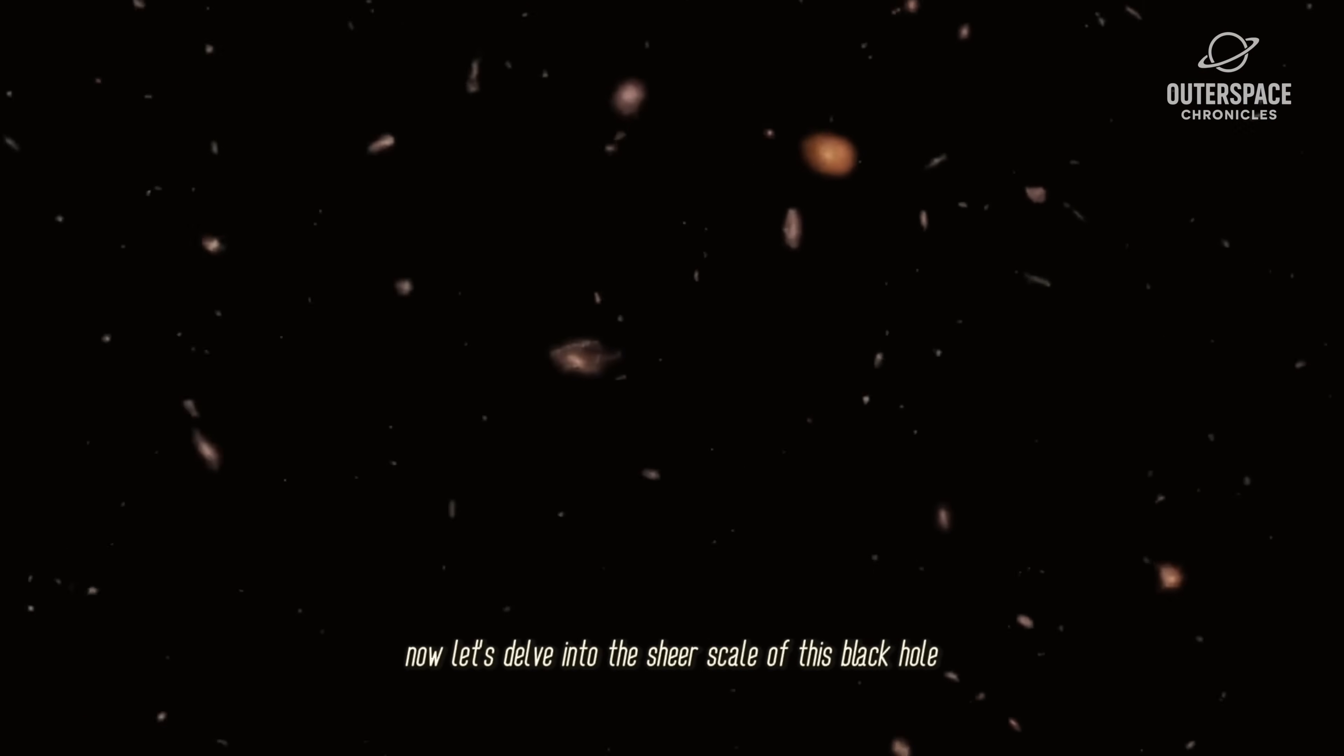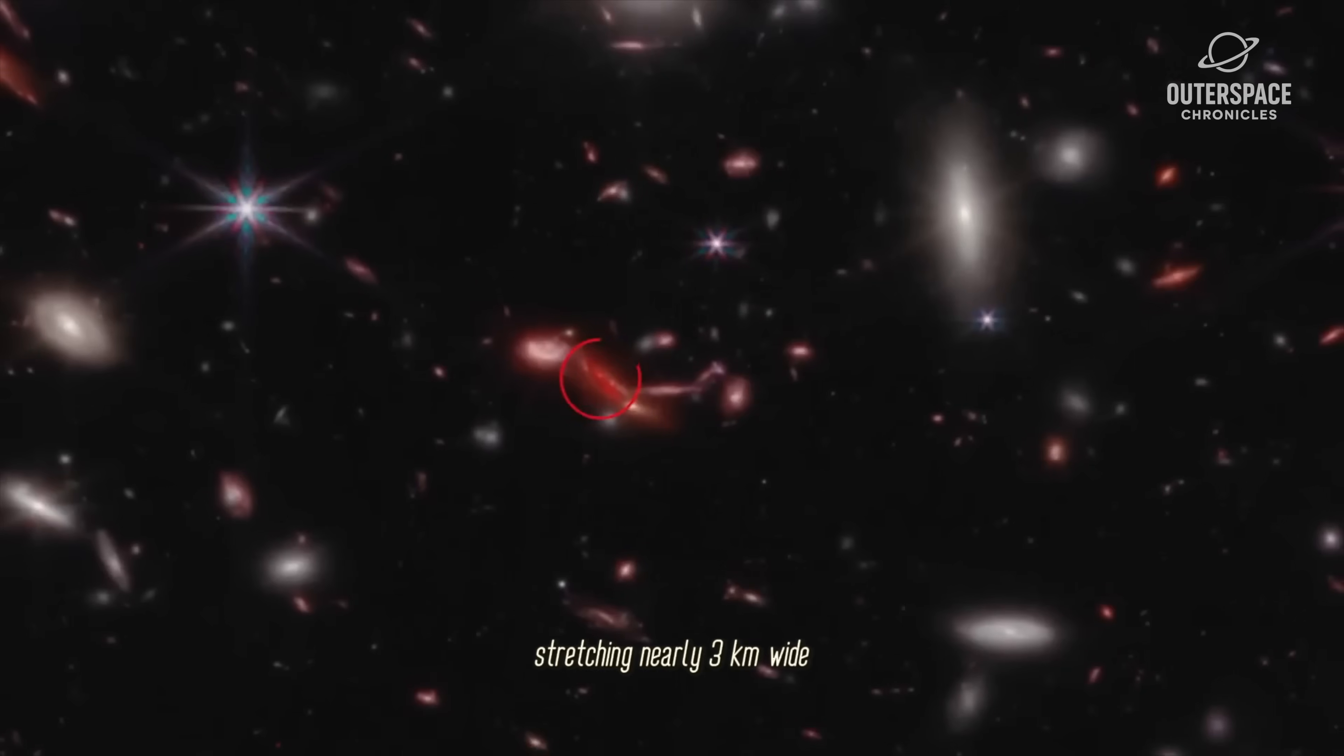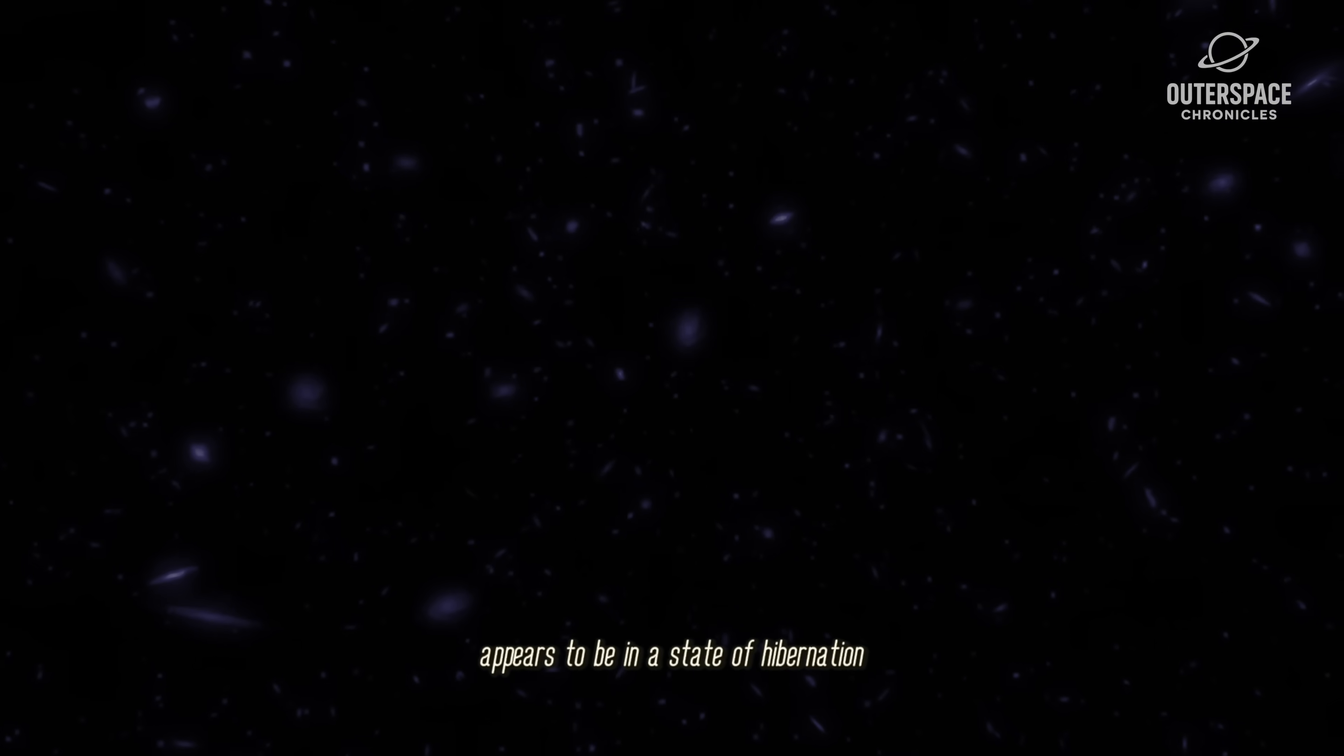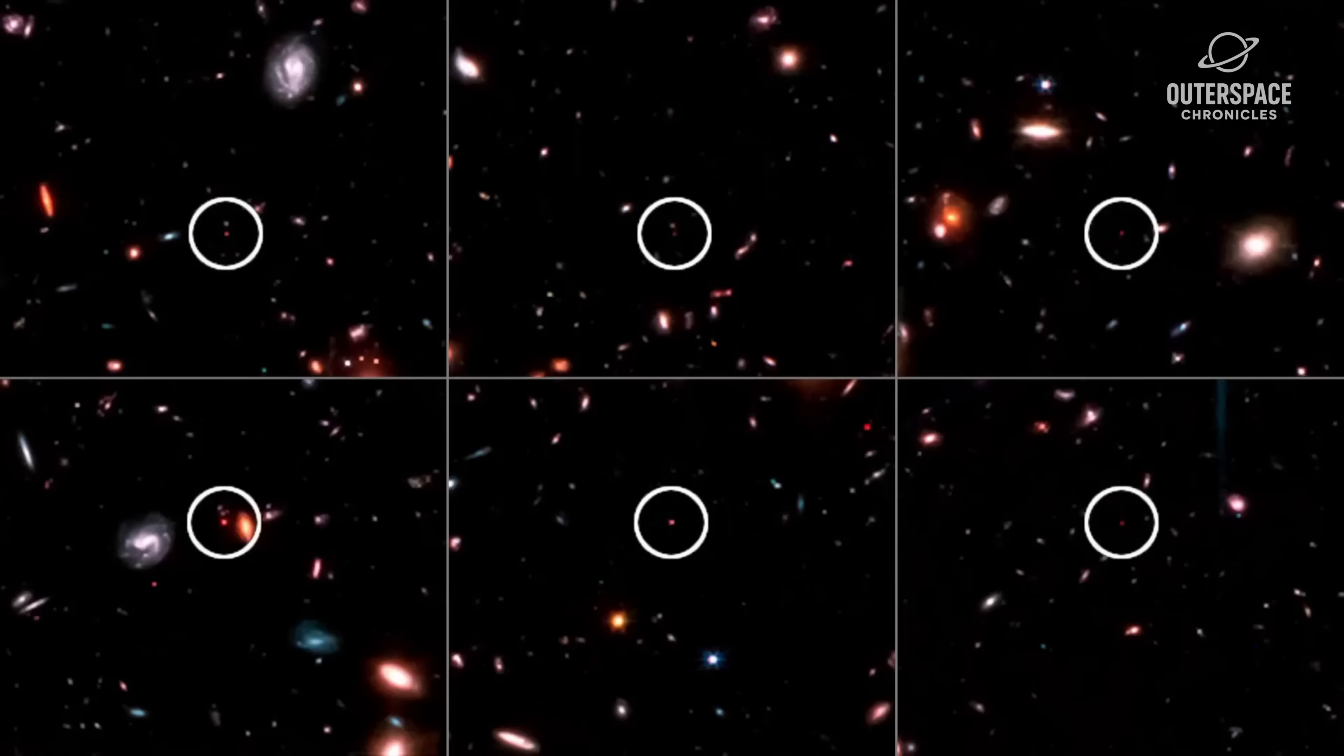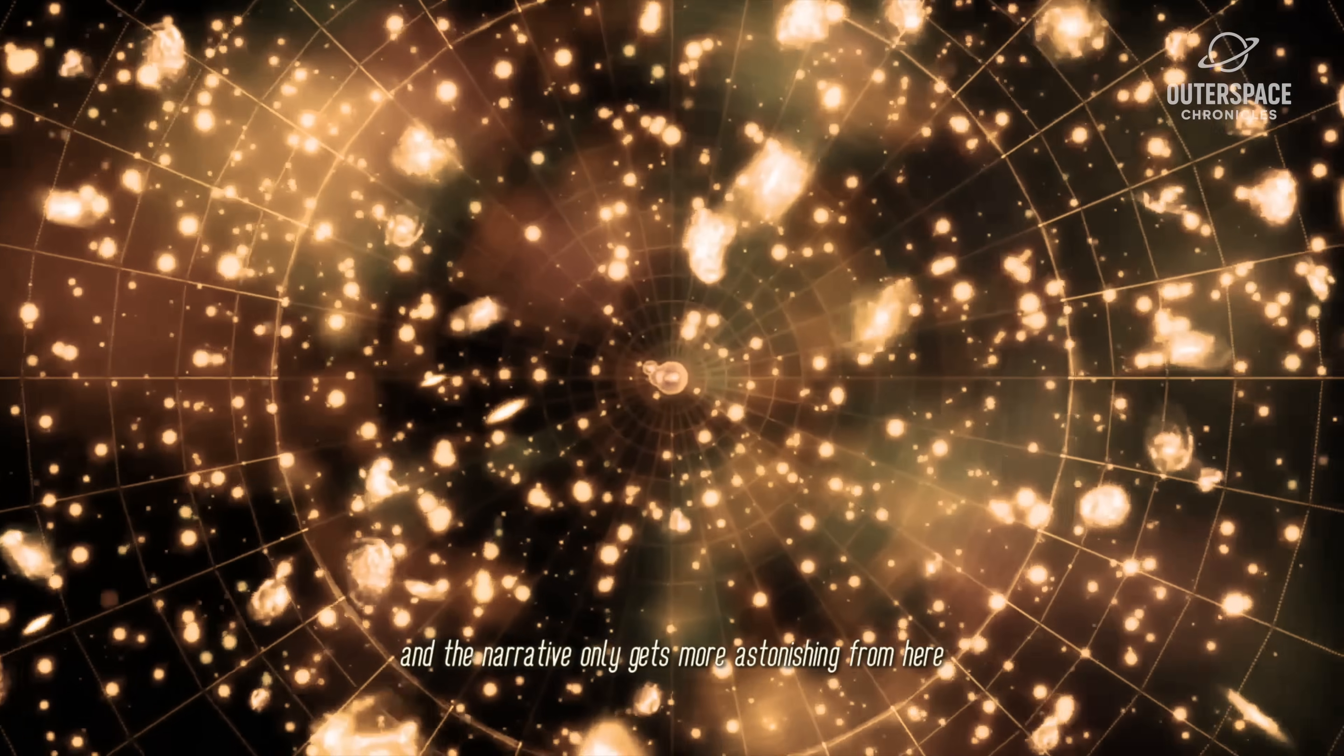Let's delve into the sheer scale of this black hole. If we imagine our sun as the size of a small marble, this gargantuan black hole would be a colossal sphere stretching nearly three kilometers wide. Even more captivating is the fact that this black hole appears to be in a state of hibernation. It is consuming material at a mere 1% of its maximum feeding capacity, known as the Eddington Limit. This suggests that it may have undergone a period of rapid growth in the past and is now resting, having dined on an abundance of cosmic material.